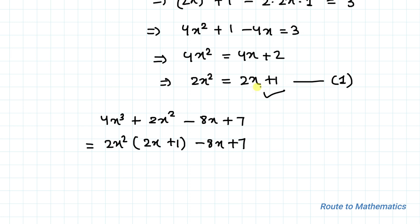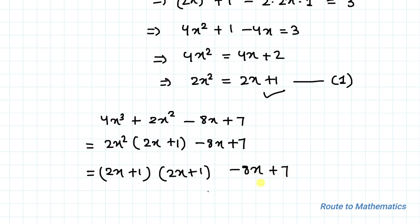From Equation 1, we have 2x² = 2x + 1. Let's substitute 2x + 1 in place of 2x², so we have (2x + 1)(2x + 1) - 8x + 7, which equals (2x + 1)² - 8x + 7.